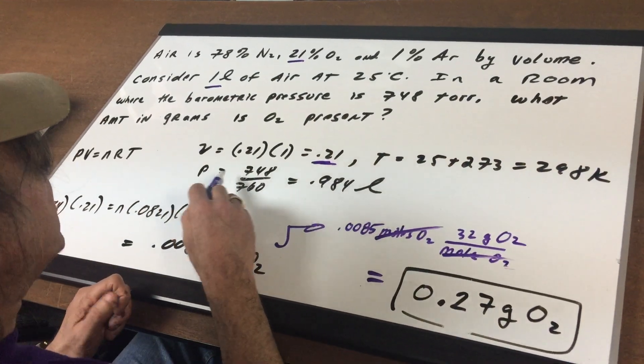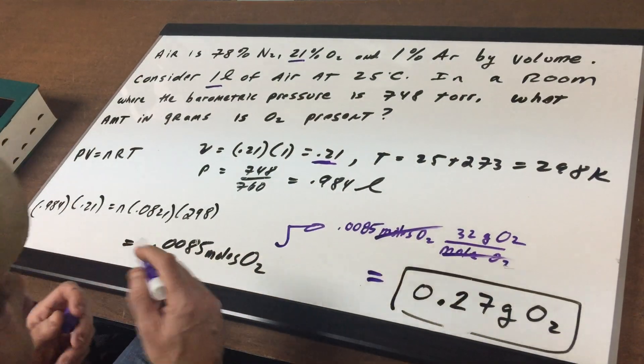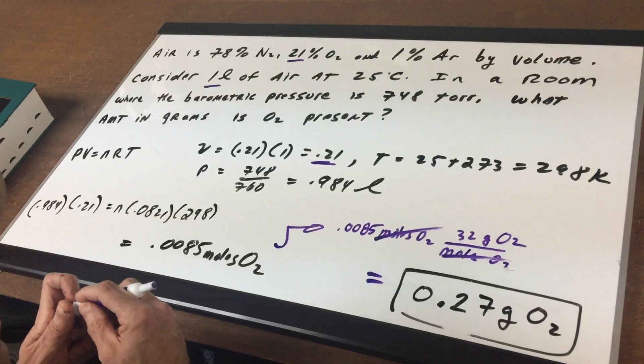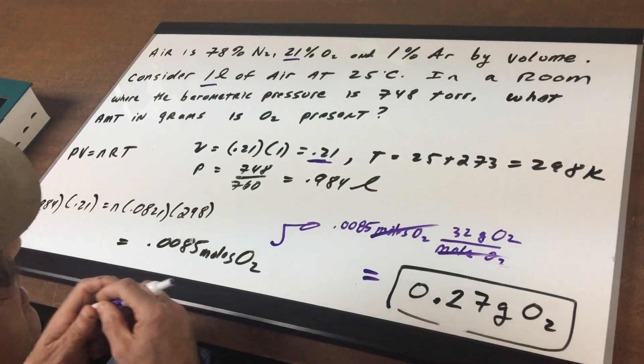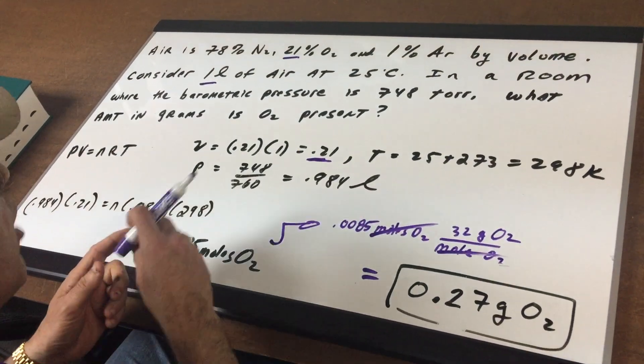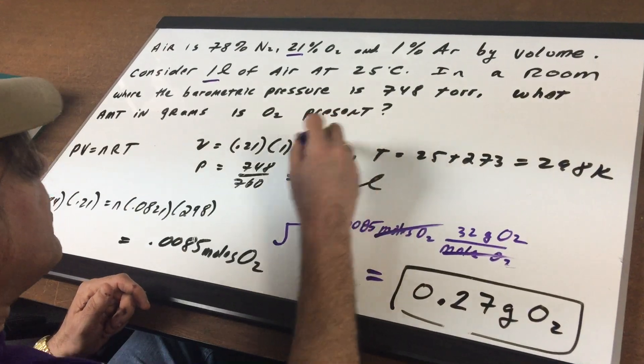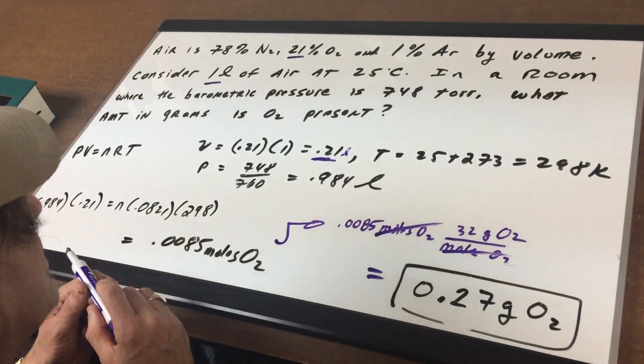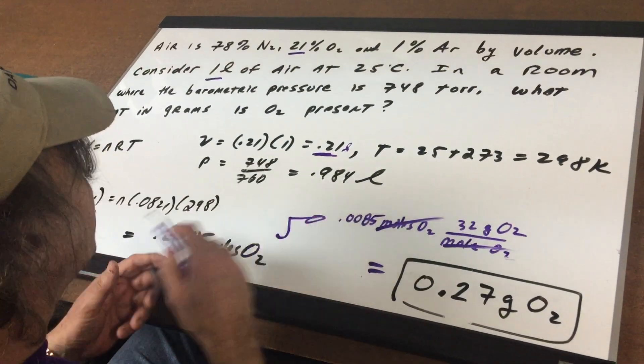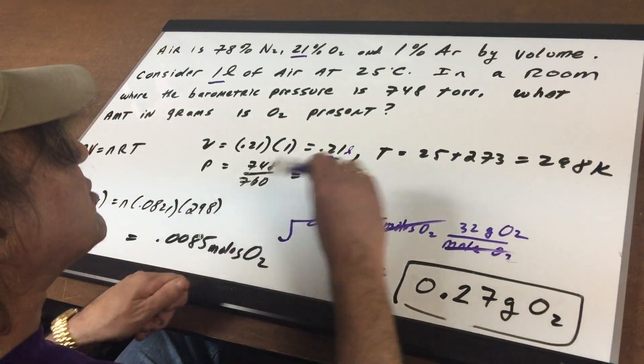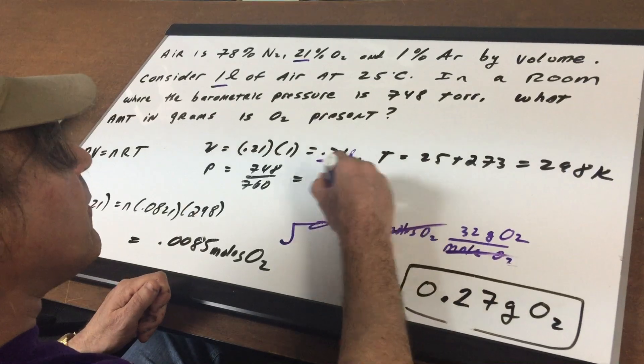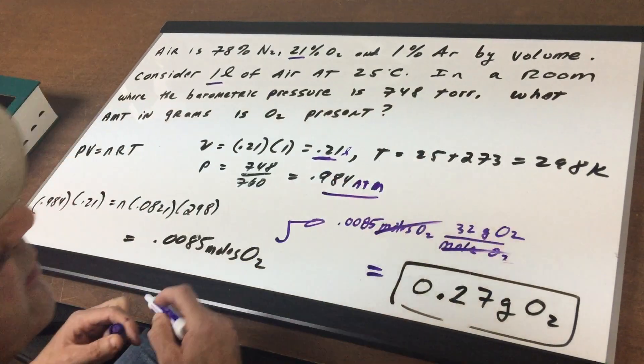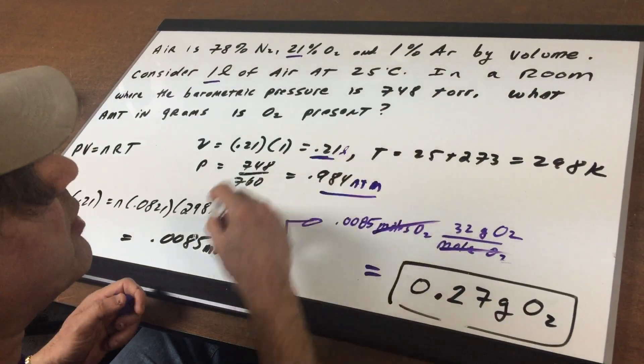Since R is 0.0821, you have to work in atmospheres, liters, moles, and Kelvin. We have it in liters. The pressure: we take 748 and divide by 760, which is very close to 1 atmosphere. The temperature we convert to Kelvin by adding 273 to 25.